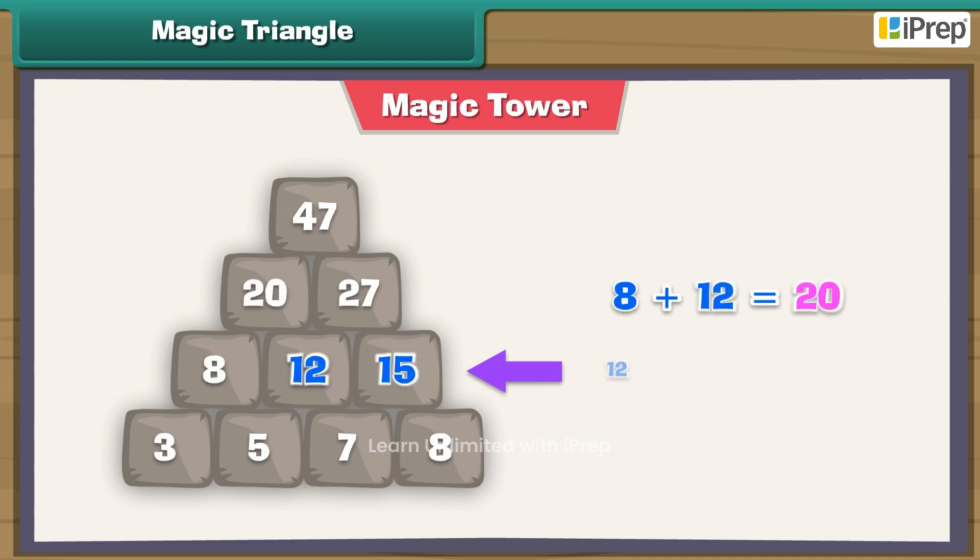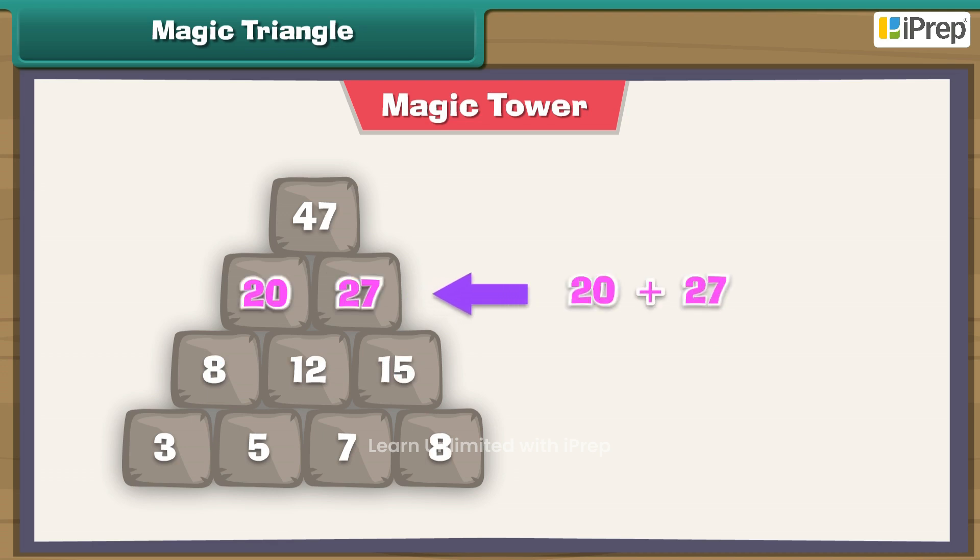12 plus 15 is equal to 27. That's how we get the numbers of the third row. And finally, 20 plus 27 equals 47.